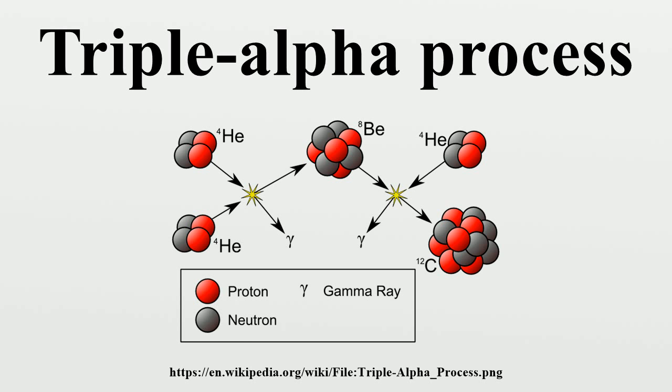In the second step, 8Be plus 4He has almost exactly the energy of an excited state of 12C. These resonances greatly increase the probability that an incoming alpha particle will combine with beryllium-8 to form carbon.